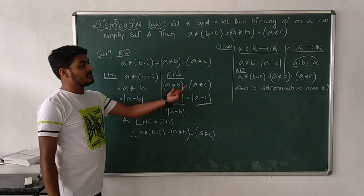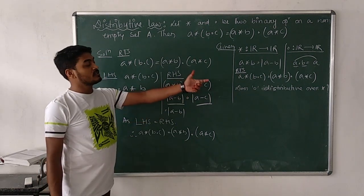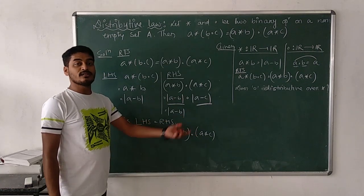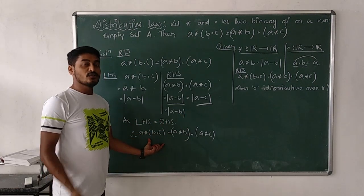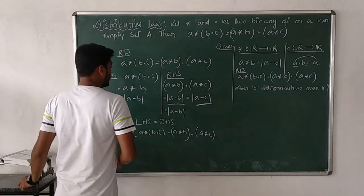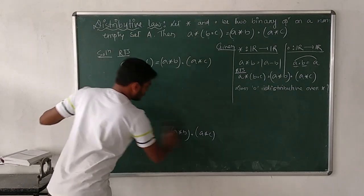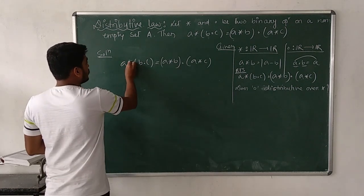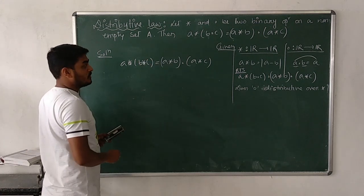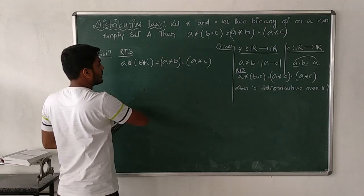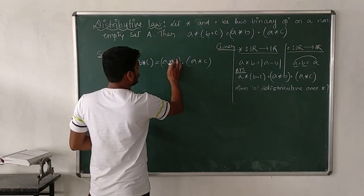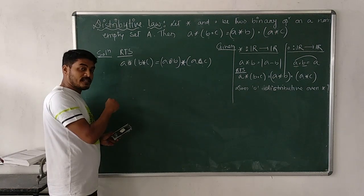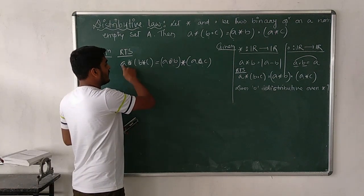Now we have to check whether dot is distributive over star or not. If not, we must justify with a counterexample. For dot to be distributive over star, dot must be outside and star inside: a • (b ★ c) = (a • b) ★ (a • c). Let us simplify the left-hand side.